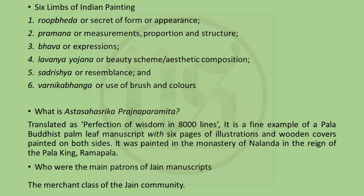Main manuscript of Pal School — Asta Sahasrika Prajnaparamita, translated as 'perfection of wisdom in 8000 lines.' It is a fine example of Pal Buddhist palm leaf manuscript with six pages of illustrations and wooden covers painted on both sides. It was painted in the monastery of Nalanda in the reign of Pal King Rampal. For Jain School — who were the main patrons of Jain manuscripts? The merchant class of the Jain community were the main patrons for these manuscripts.